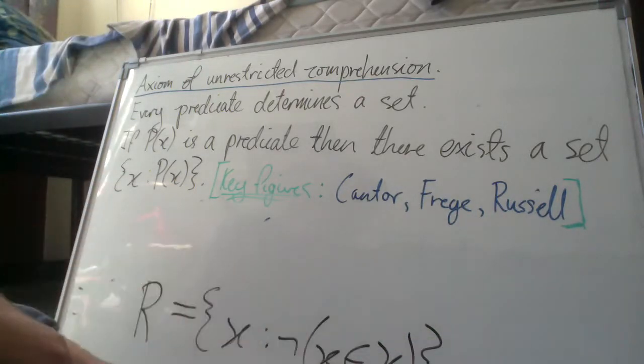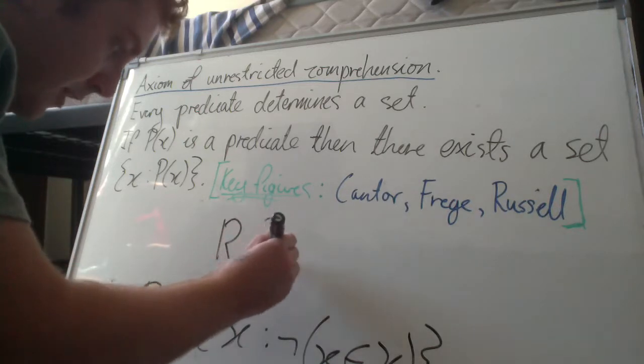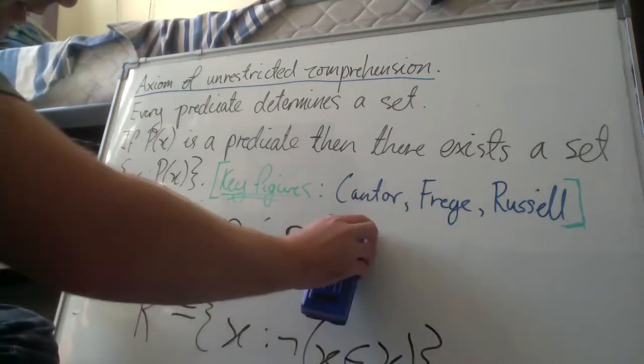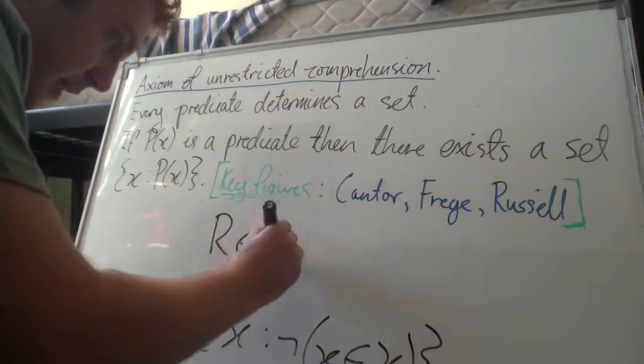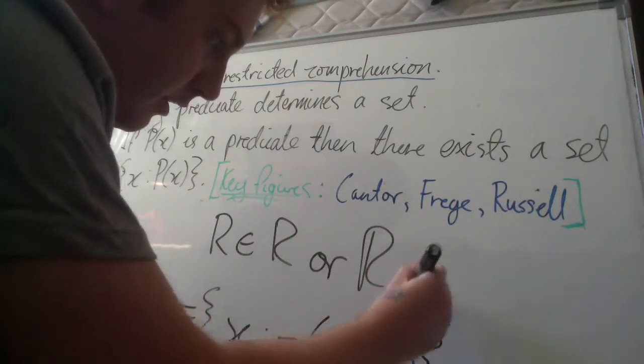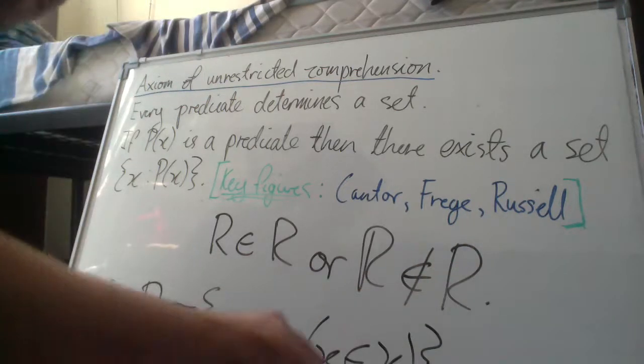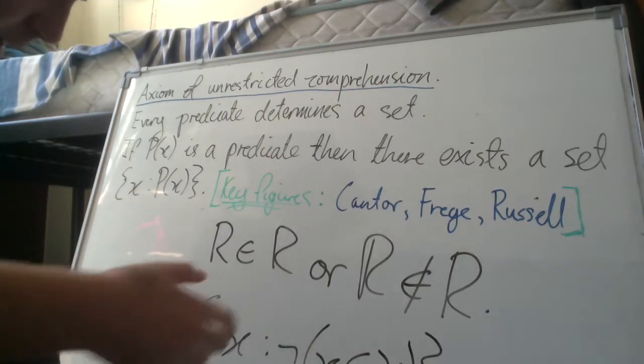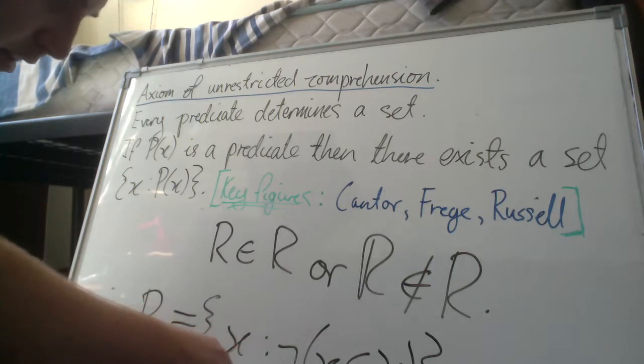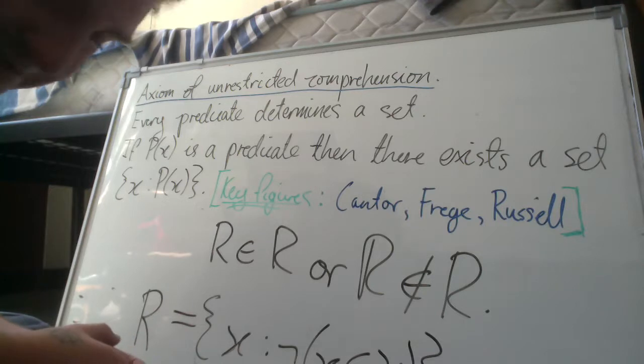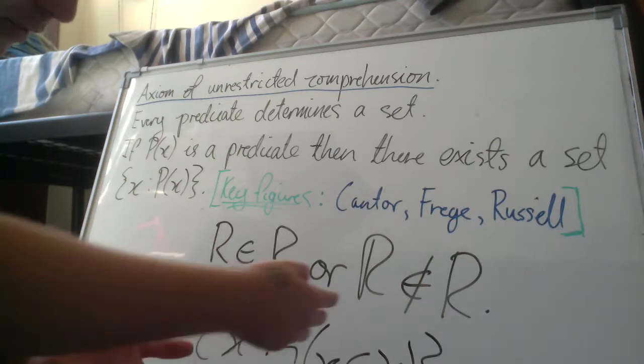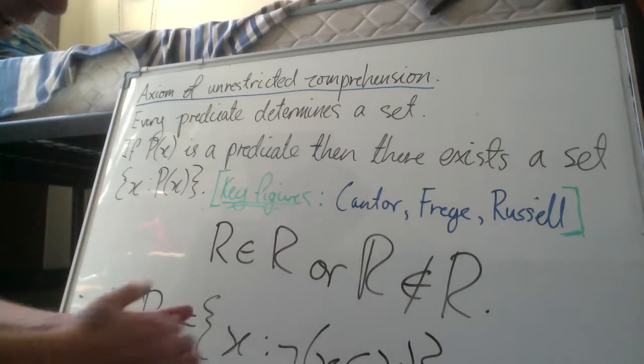So the paradox comes when we ask the question: R element R? So let's put it a little bit more rigorously. We say R element R or R not element R. So just intuitively, if R is an element of R, then by the definition of R, if we plug R in here, R is not an element of R. Now if R is not an element of R, if we plug R into the definition, well if R is not an element of R, R satisfies the definition, hence R is an element of R.